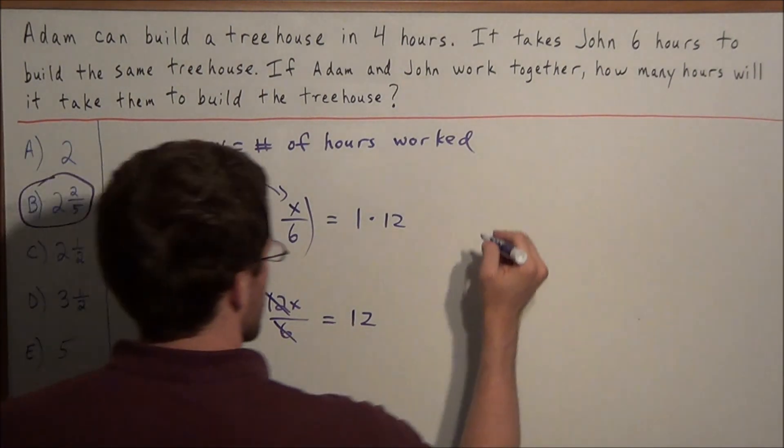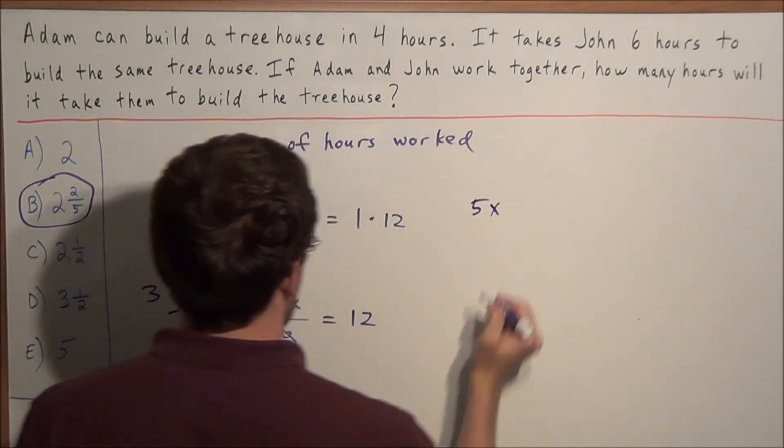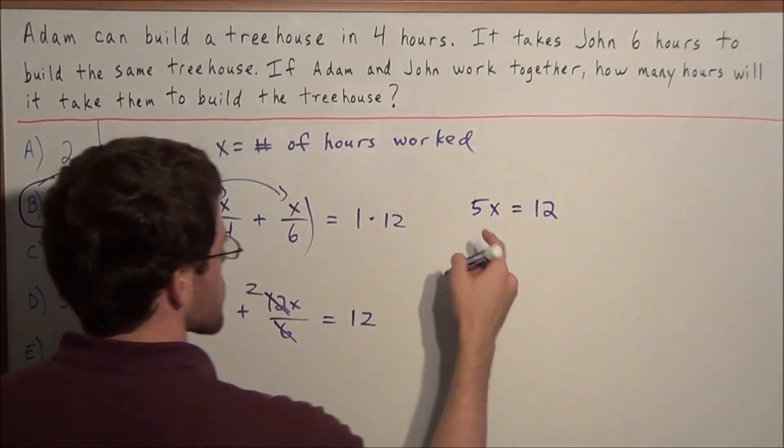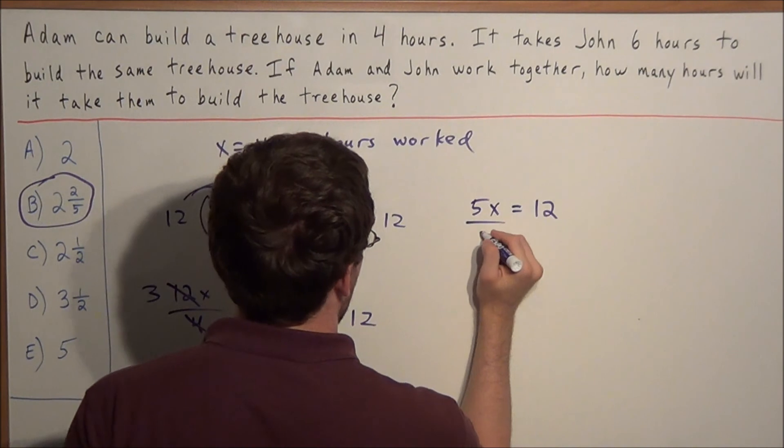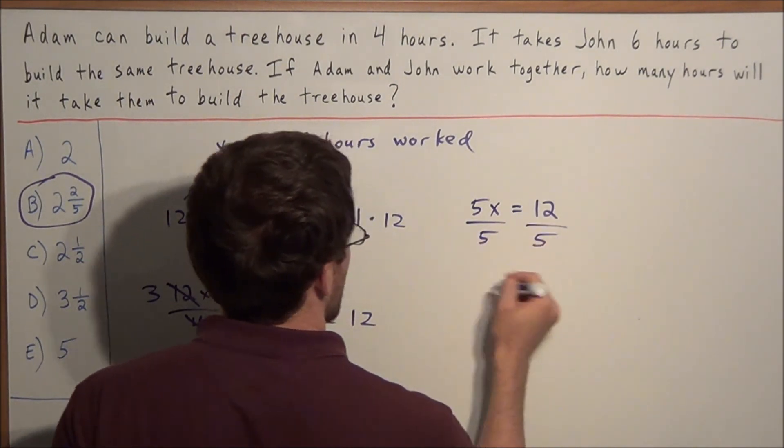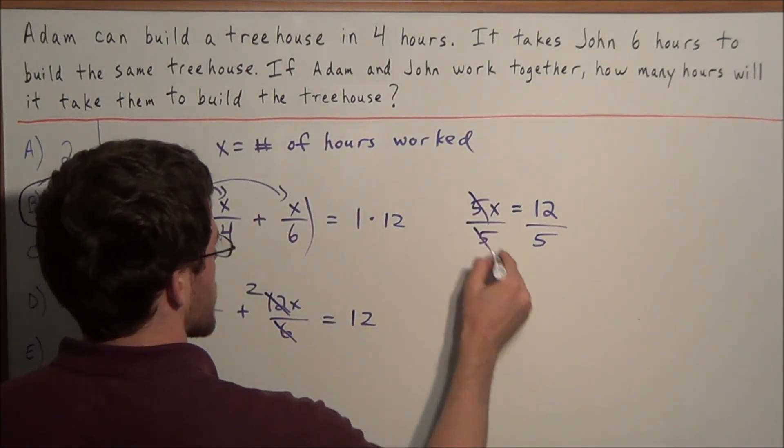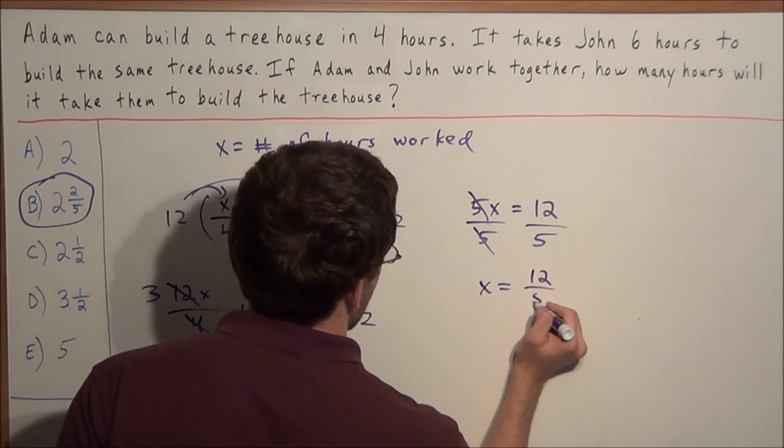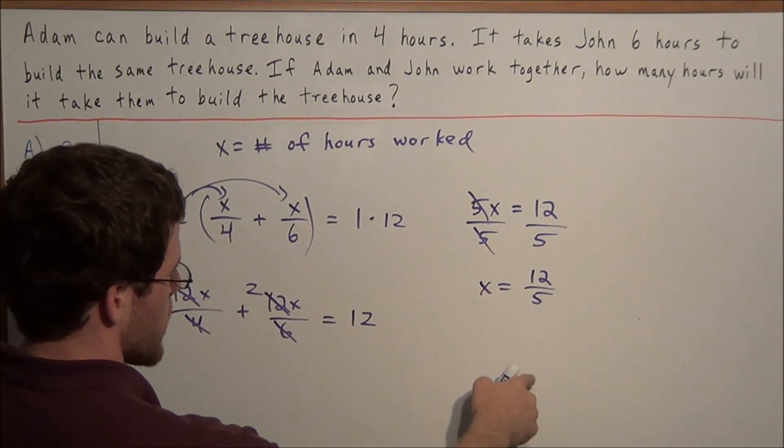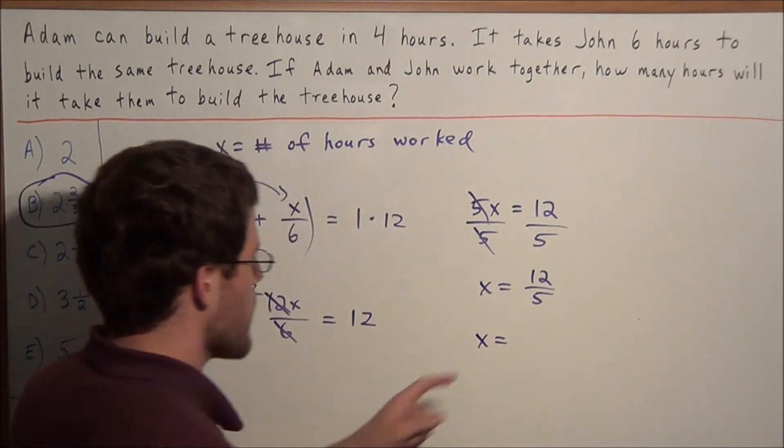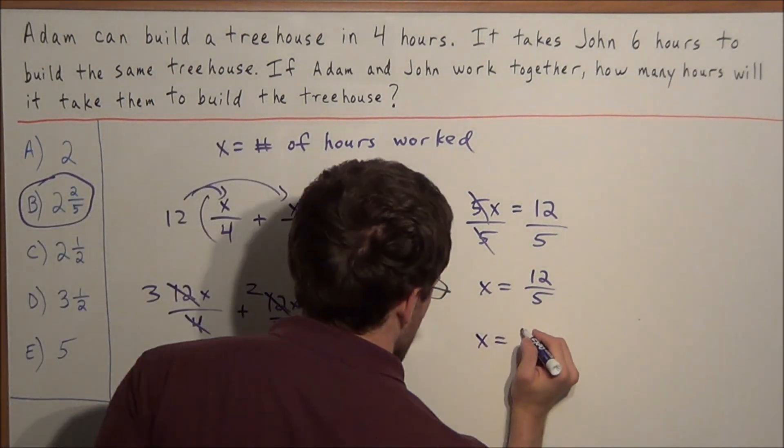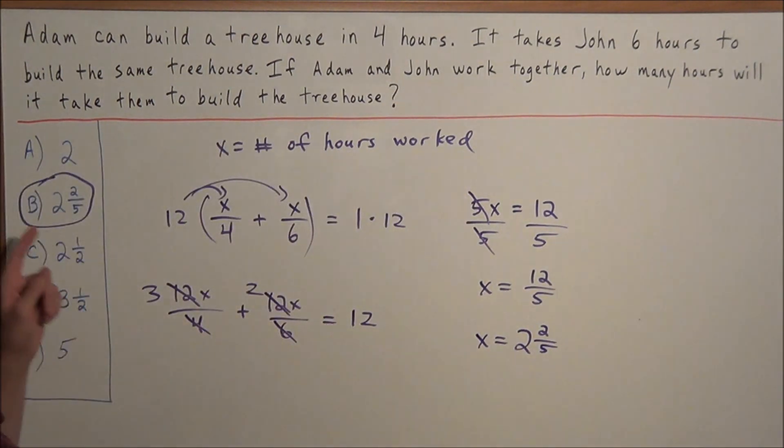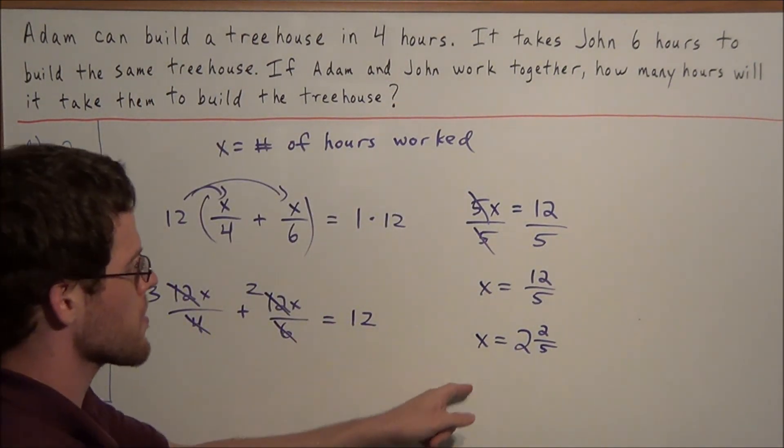So now we have three x plus two x equals twelve. Well, three x plus two x is five x. So we have five x equals twelve. So now to solve for x, we divide both sides of this equation by five. And now five divided by five will cancel, and we have x equals twelve fifths, which when we turn this into a mixed number, we have x equals five goes into twelve twice with the remainder of two, so we have two and two fifths. So we arrive at the same answer using the algebraic method as well.